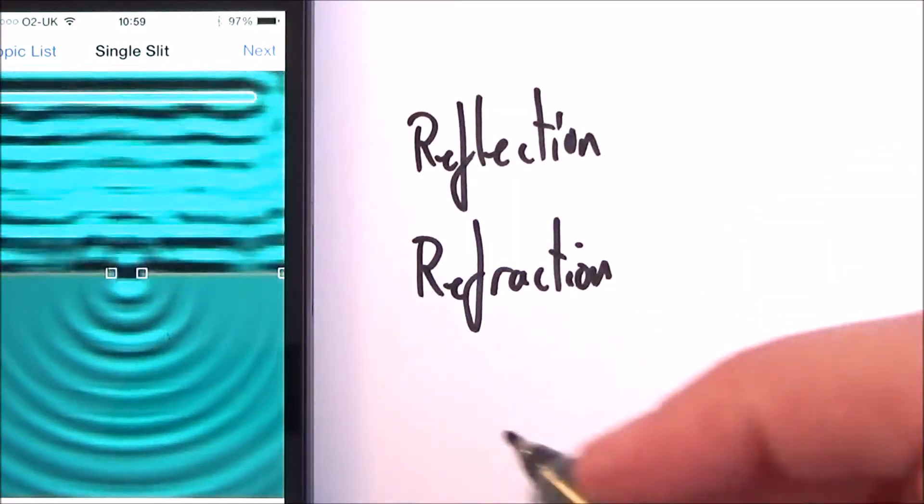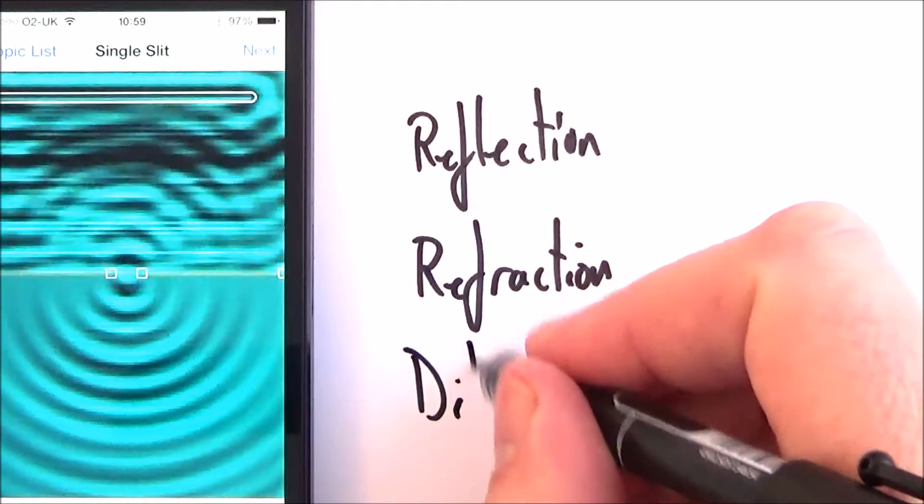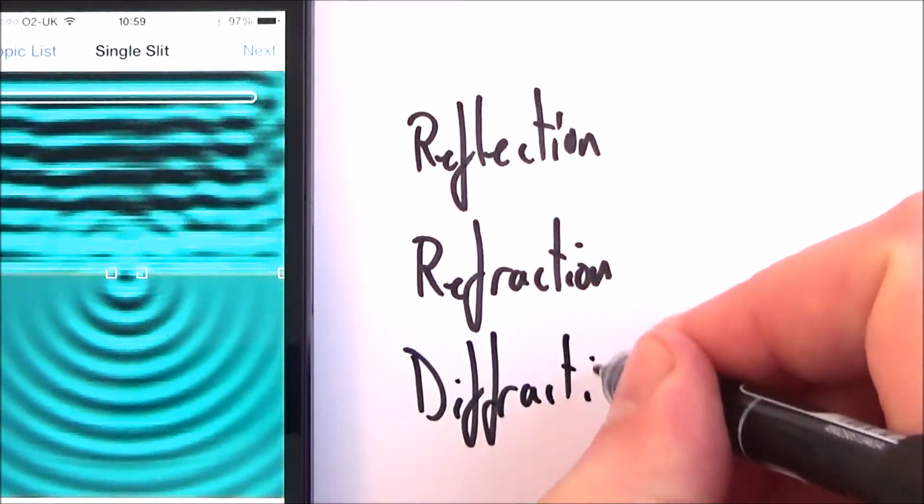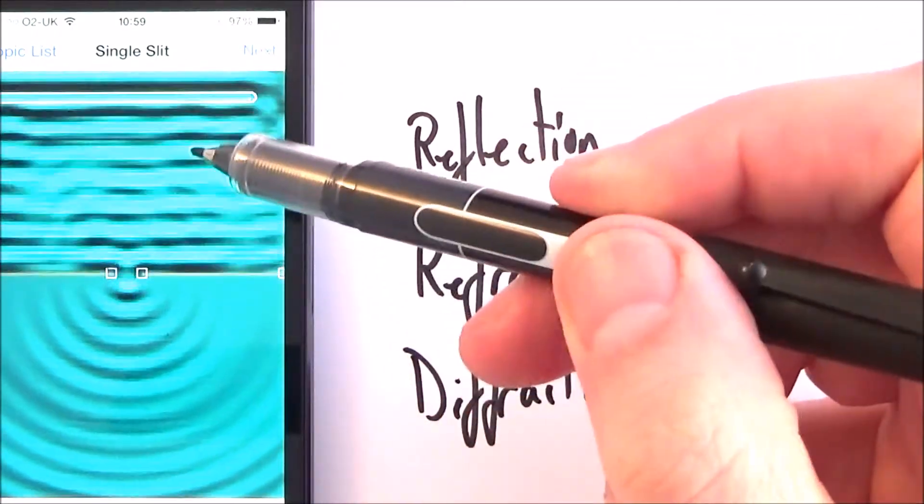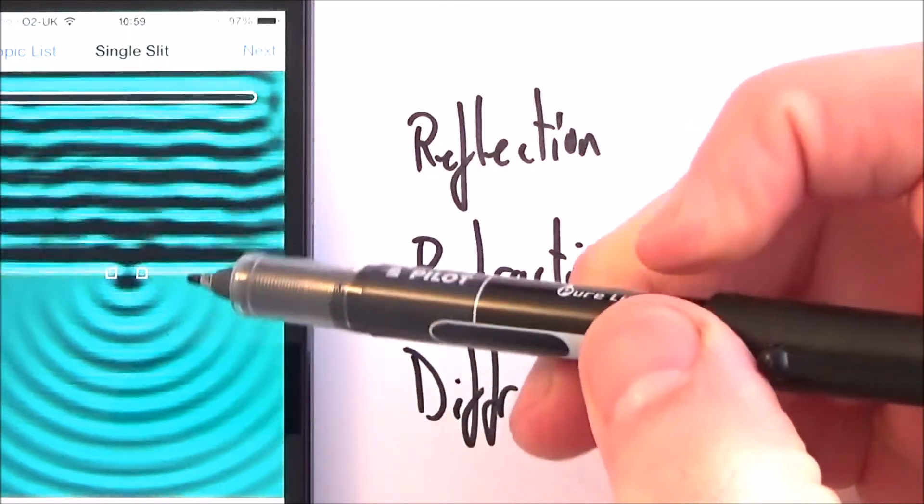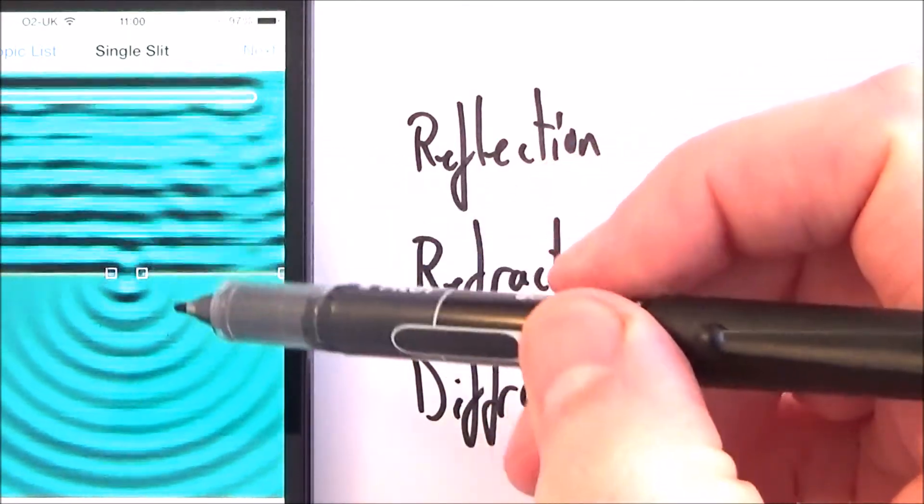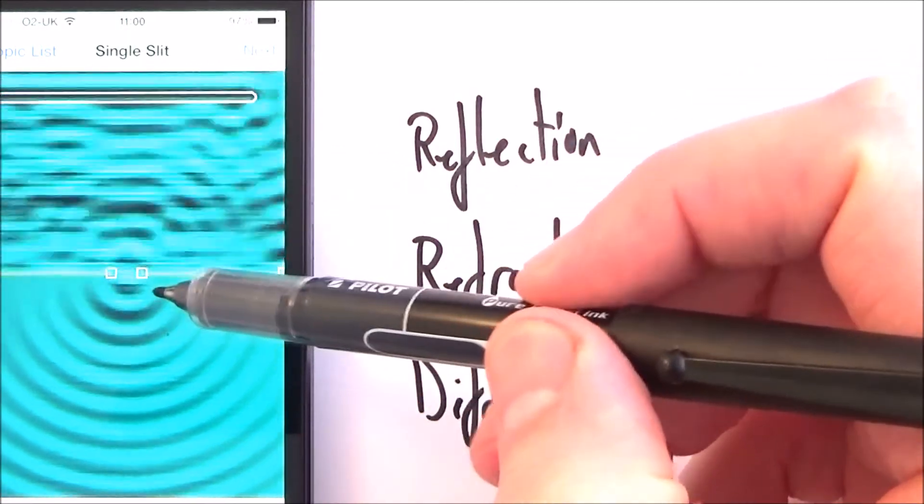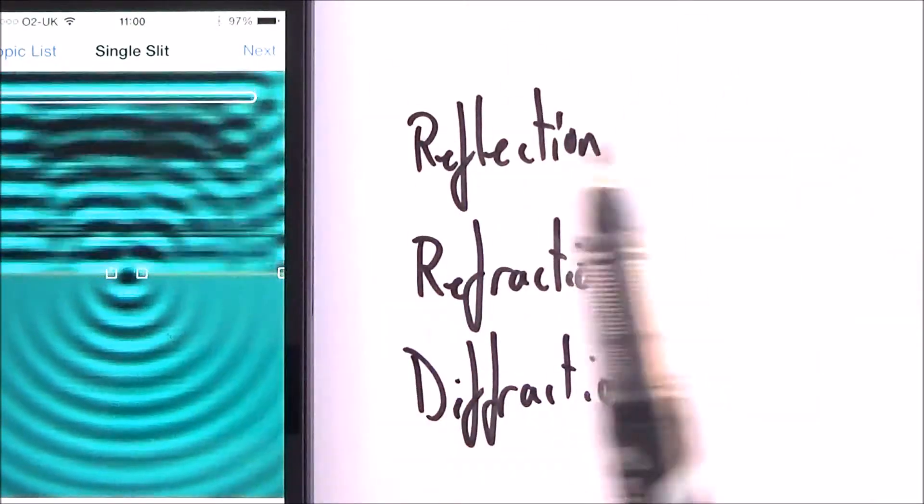We also have an effect called diffraction. So diffraction is when a wave moves through a gap. And what we see is if the wavelength is approximately equal to the gap size, the wave tends to spread out in all directions.